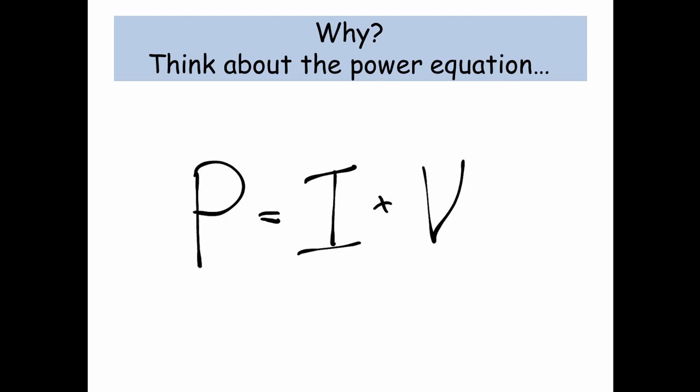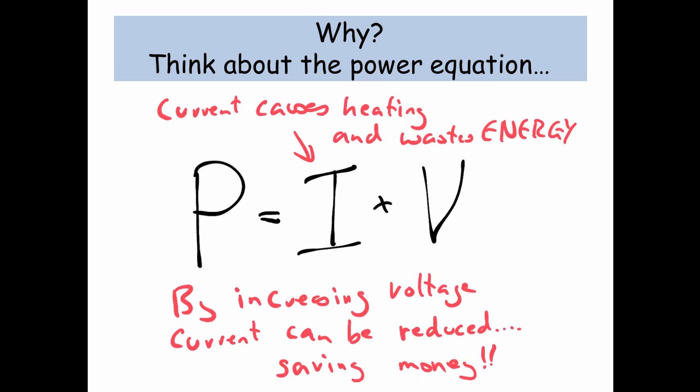But why? What's the point? Well, let's think about the power equation. The problem is, current causes heating. And if we have heating in the wires in the national grid, that wastes a huge amount of energy. So what we can do is increase the voltage. And by increasing the voltage, we can reduce the amount of current flowing through our wires, thereby reducing the amount of heating, thereby saving energy and basically saving money.